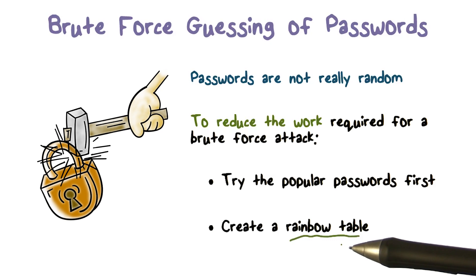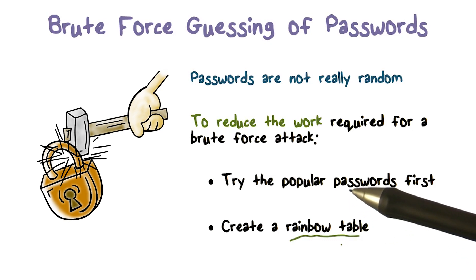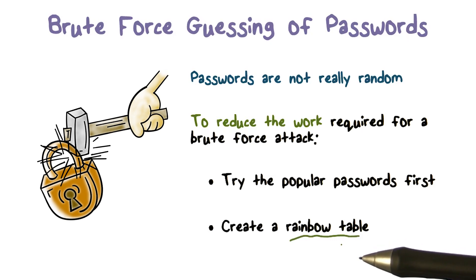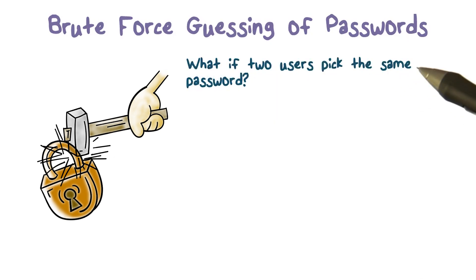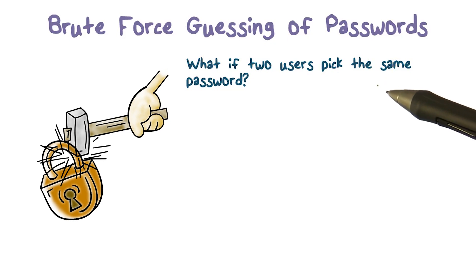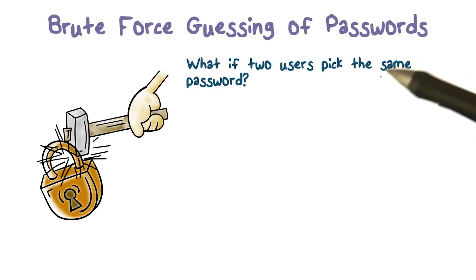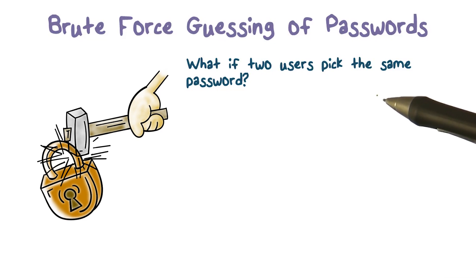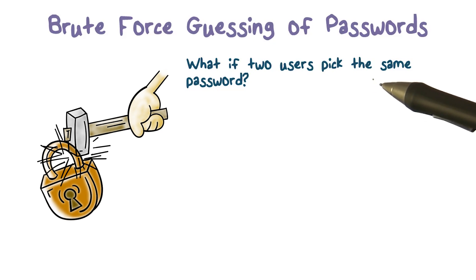Does that match some entry in the rainbow table without having to compute the hash function? So the tricks a hacker can use are: use a rainbow table, or be smart and try more popular passwords first. Related to passwords and guessing: what if two users pick the same password? If they're common passwords, then '12345' is picked by lots and lots of users.